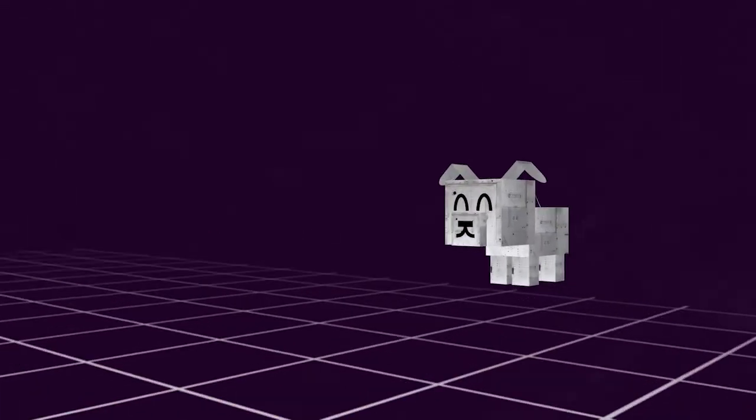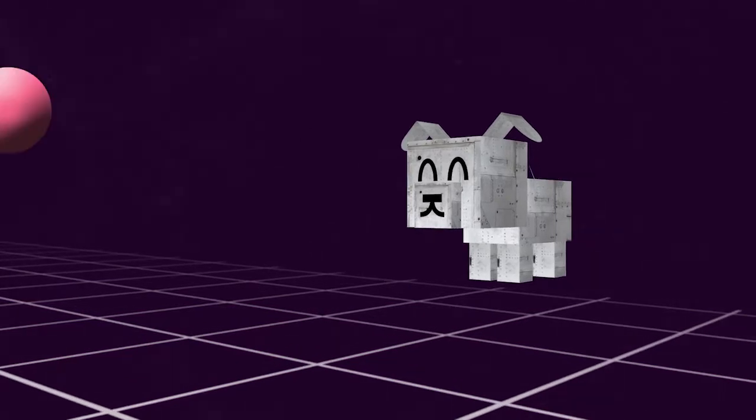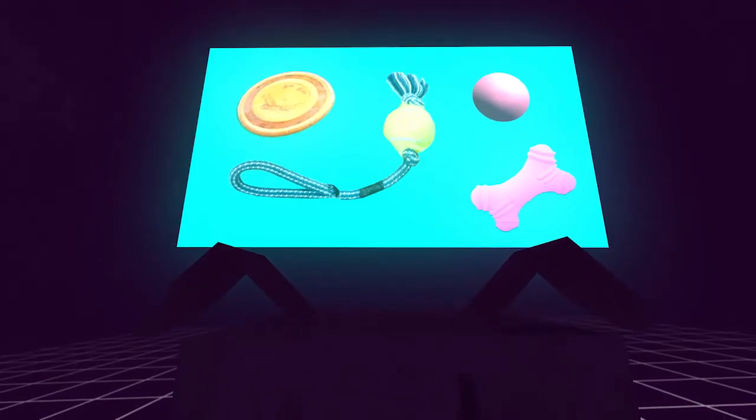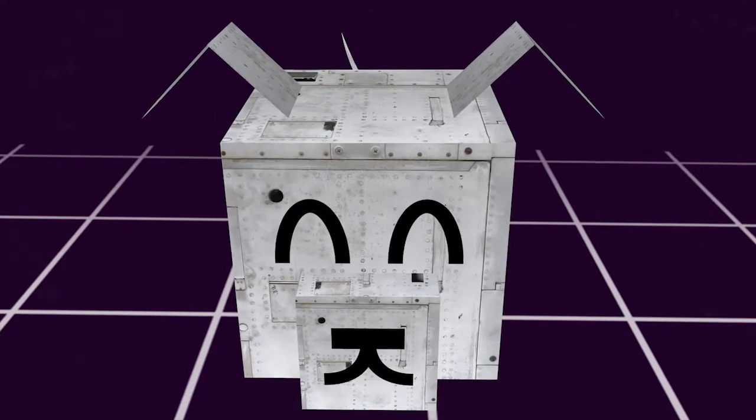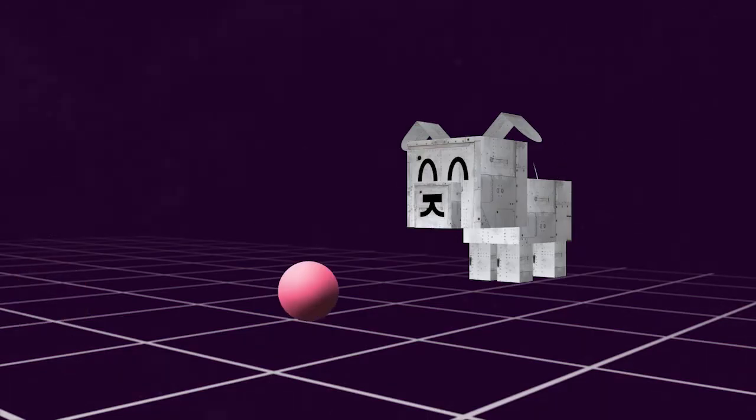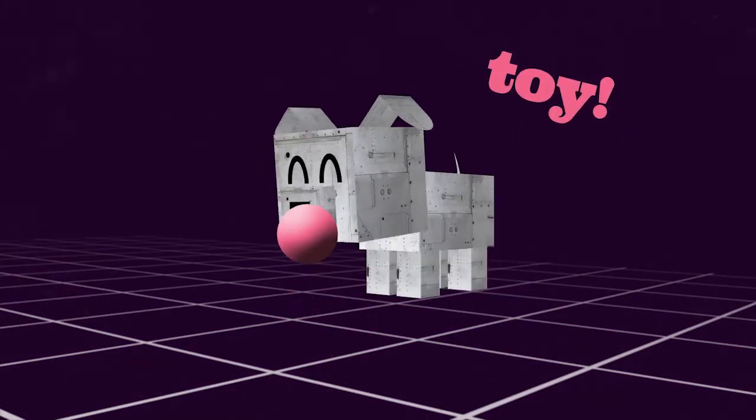At first, your robot dog might not even know what a dog toy is, so that's the first thing you need to teach it. You show it lots of pictures of dog toys so that it learns to recognize them quickly and easily. It might make some mistakes at first, but with each correct answer, it gets a reward.